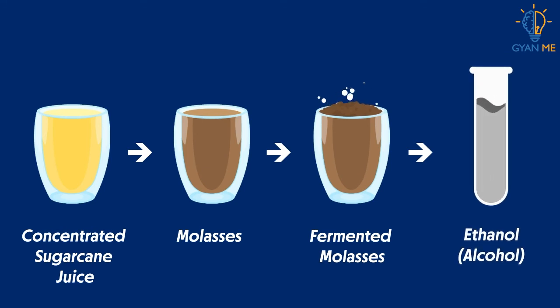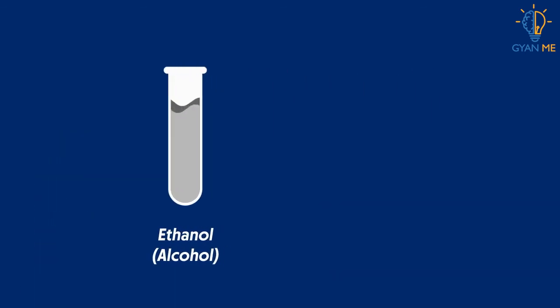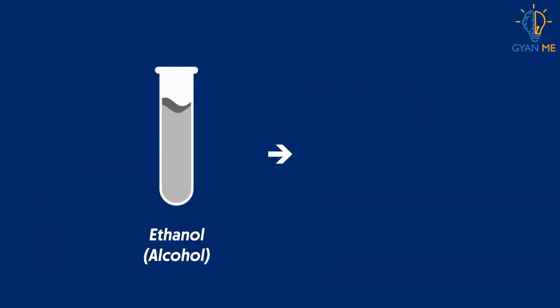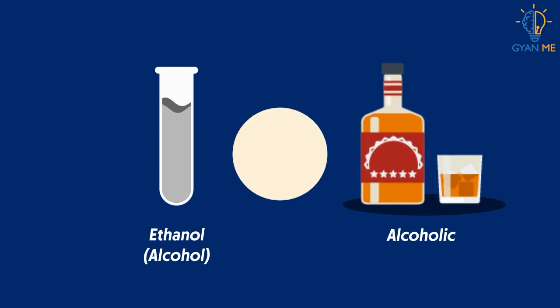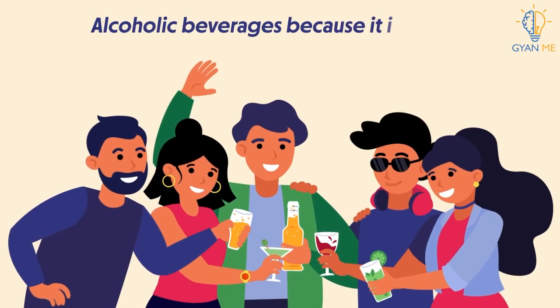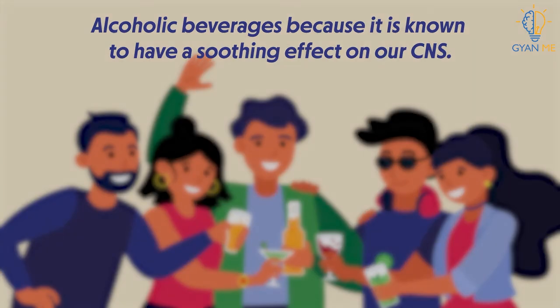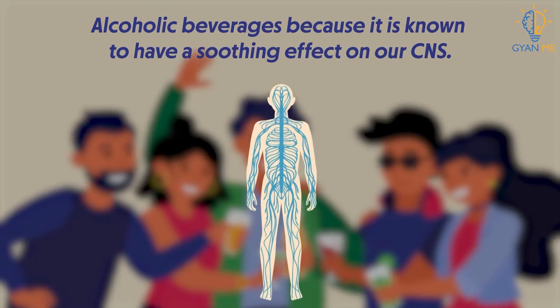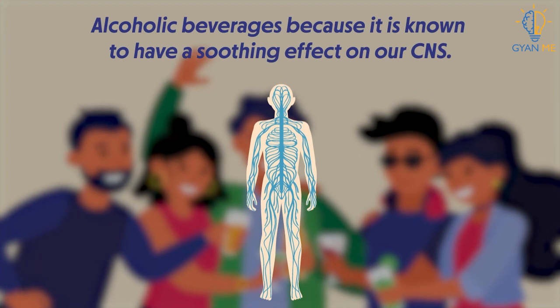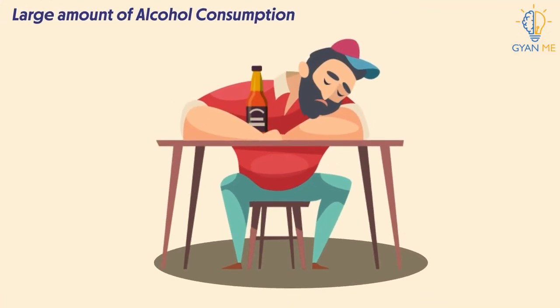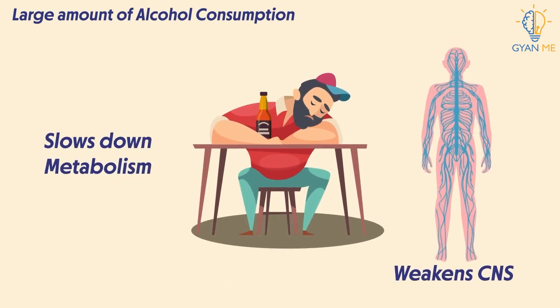Ethanol is an active ingredient in all alcoholic beverages because it is known to have a soothing effect on our CNS — the central nervous system. However, long-term alcohol consumption leads to many health problems. When a large amount of ethanol is consumed, it slows down the metabolism and weakens the central nervous system of our body.